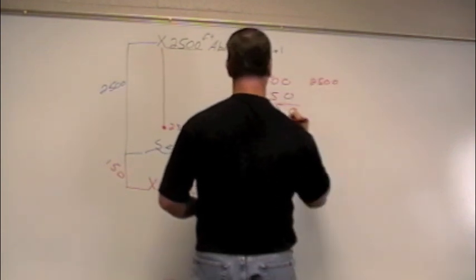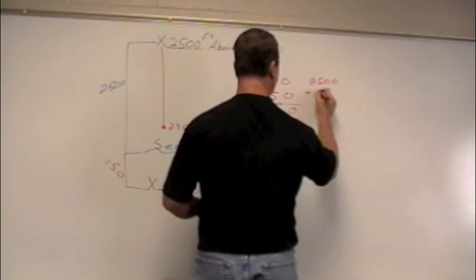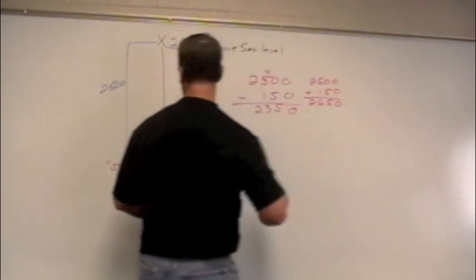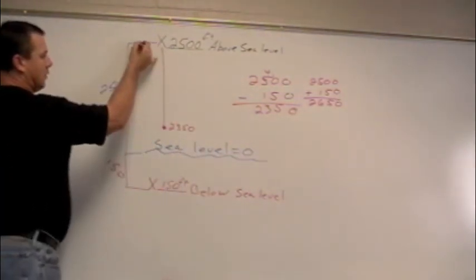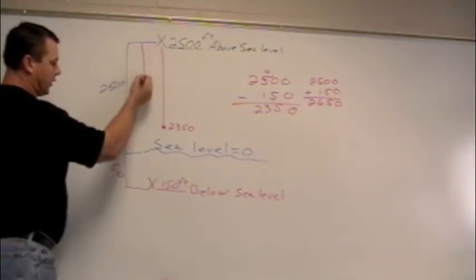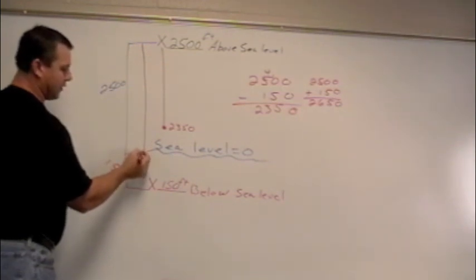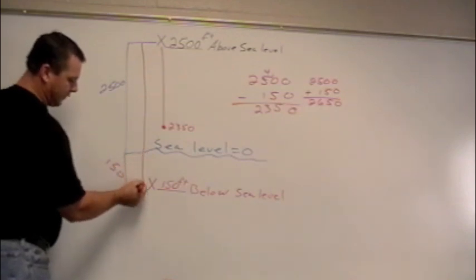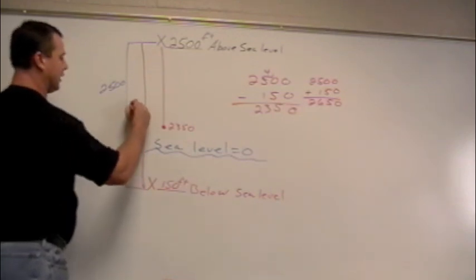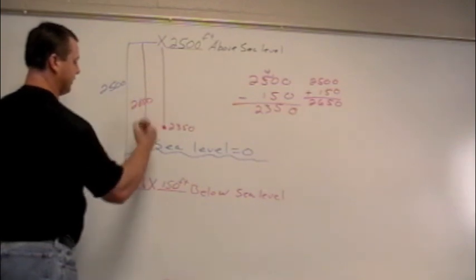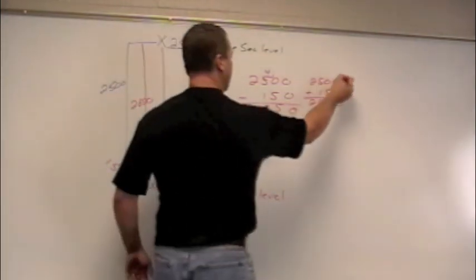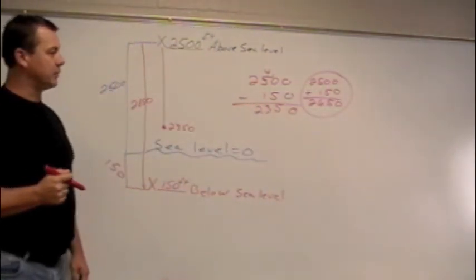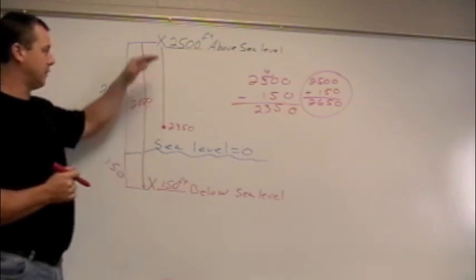2,500 plus 150. And you get 2,650. All right. So let's look at this. From our original point to sea level, it's 2,500 feet. And we have to go another 150 feet, which, yes, would give us 2,650 feet. So right here would be the application we need to do with the two numbers. We need to add the two to get from point A to point B.